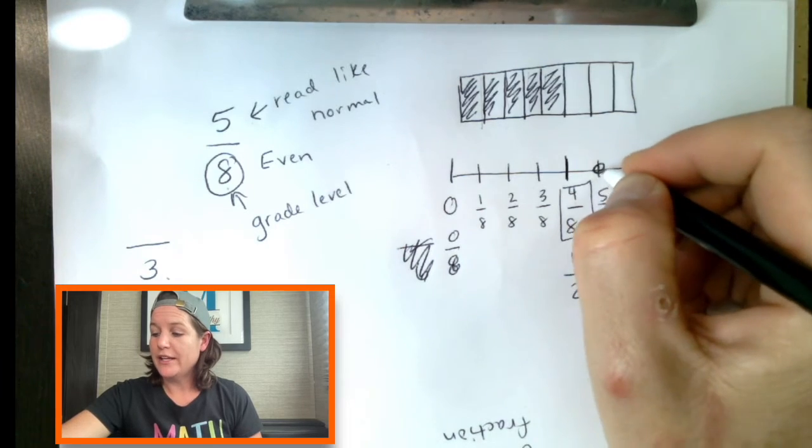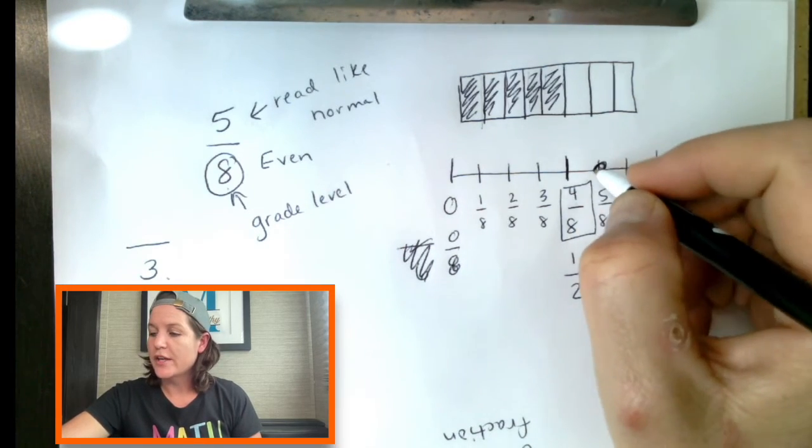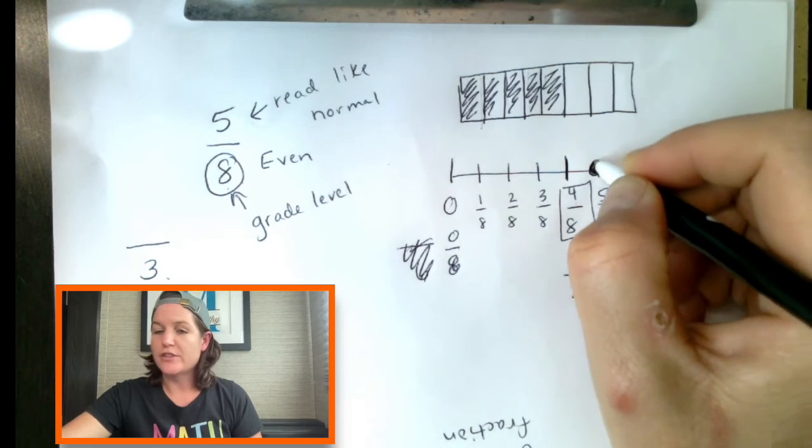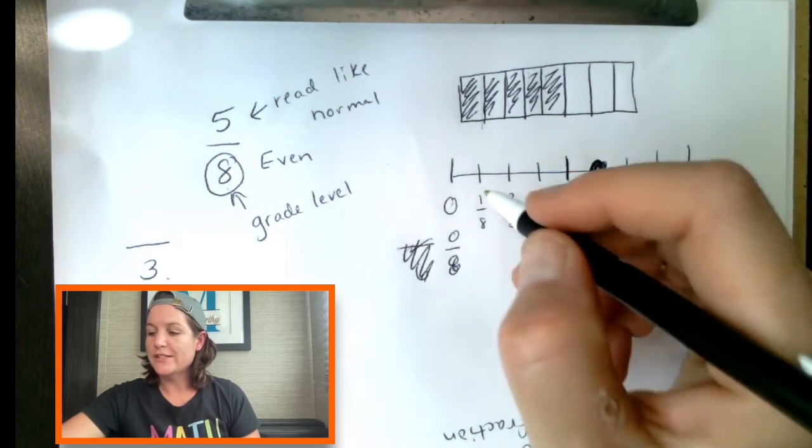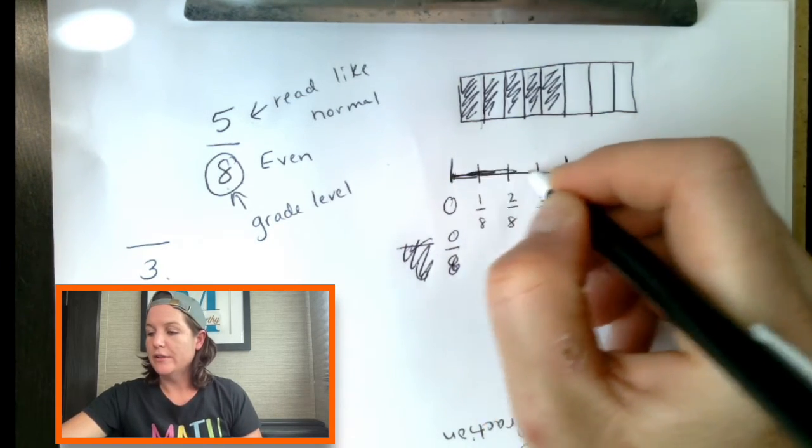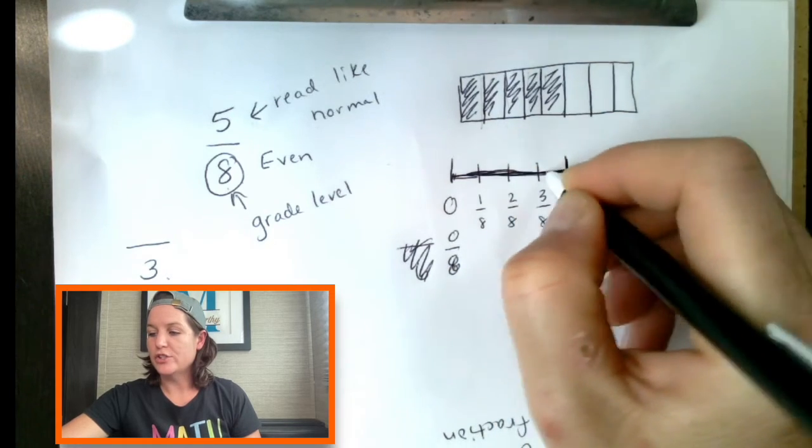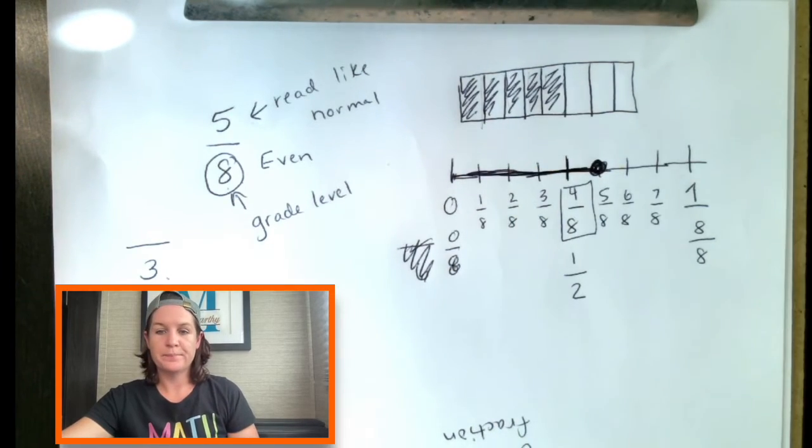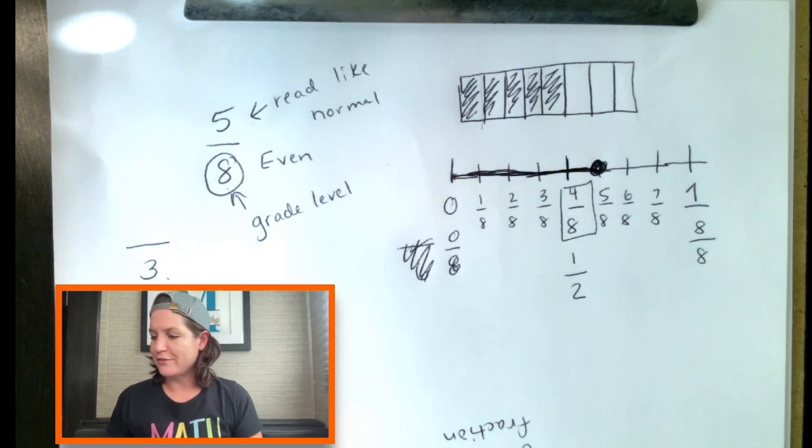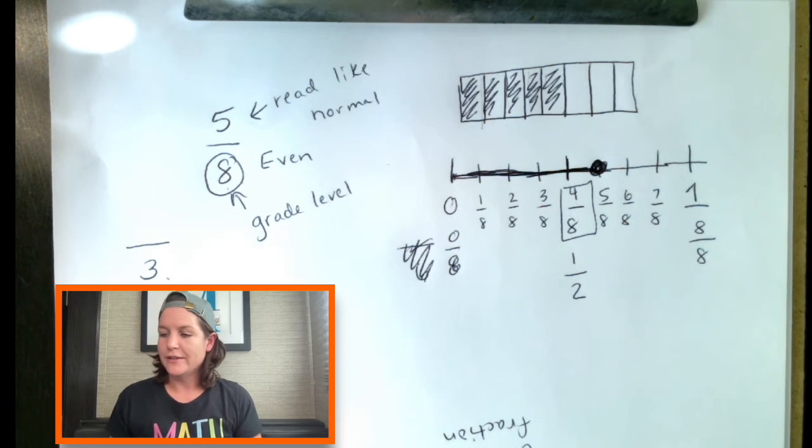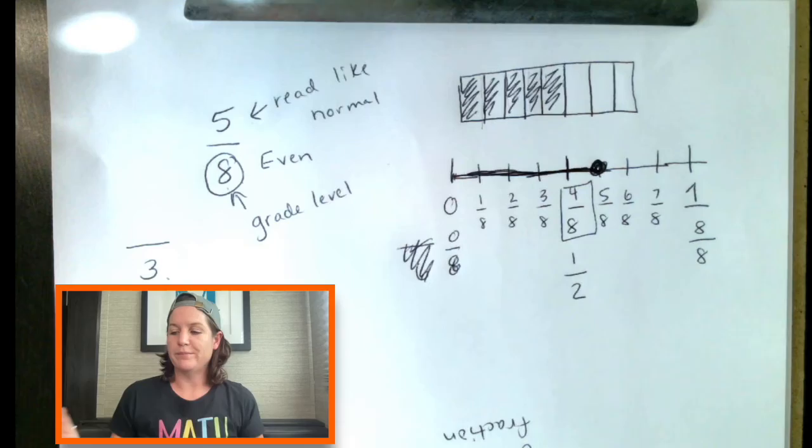And if we're modeling it, that five eighths would be right there plotting the point. And sometimes we even shade it like that to show the distance. That's how you would model in a number line. I'm not sure if I did that for the two thirds one. It doesn't look like I did, but you can go back, plot the point, all that jazz. I hope that that was helpful to you.